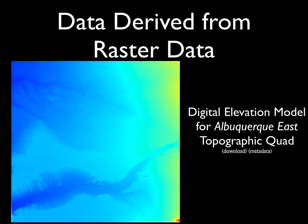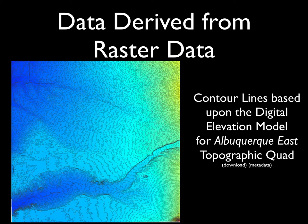Given a particular raster dataset, other datasets may be derived from it, as illustrated here. This is a digital elevation model for an area around the city of Albuquerque in New Mexico, based on topographic data and representing the ground elevation for that area. One product that can easily be generated from that digital elevation model is a set of contour lines, representing lines of equal elevation. Contour lines are often used in vector data format or cartographic products to visualize the shape of the landscape, which may be easier to recognize than interpreting the continuous gradient of values in the elevation model itself.